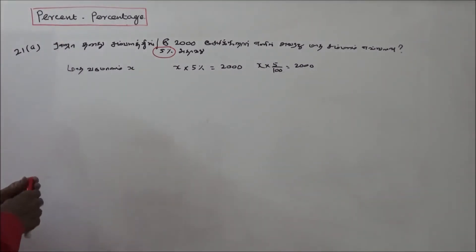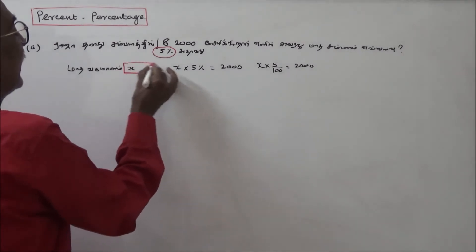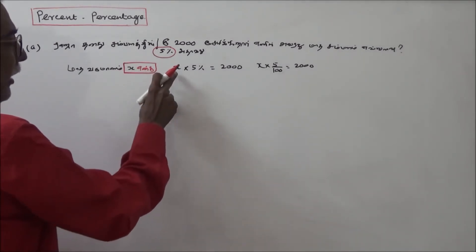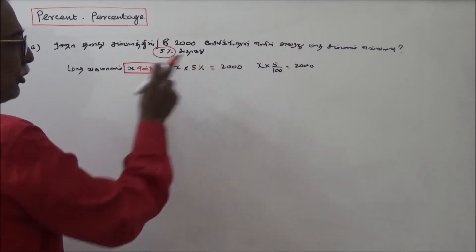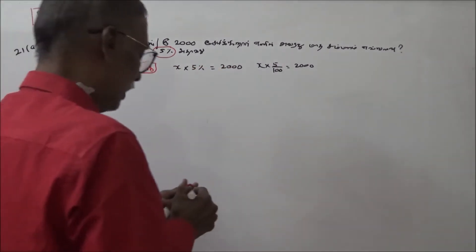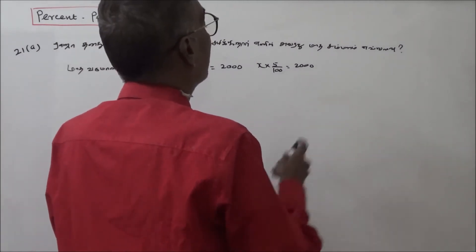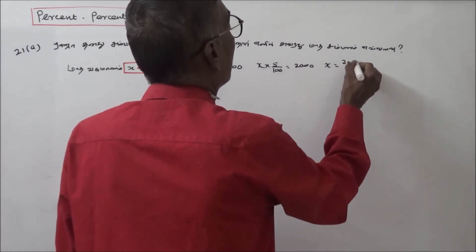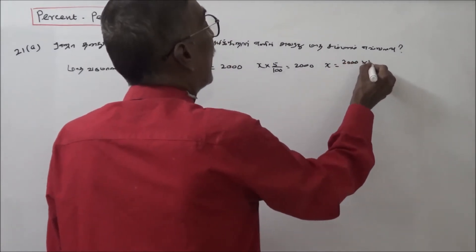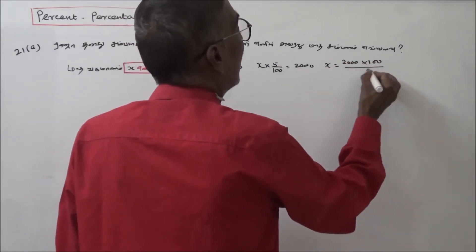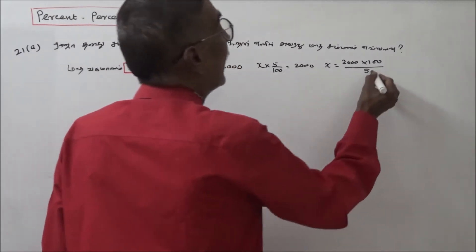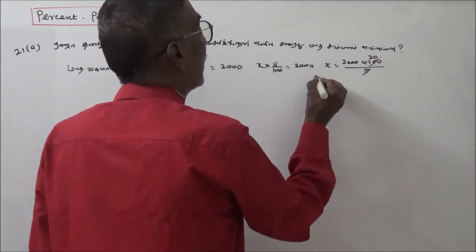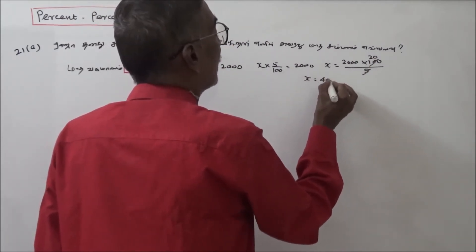Solving for x: x is equal to 2,000 divided by the fraction. So x is equal to 40,000 rupees.